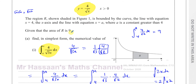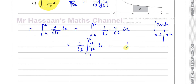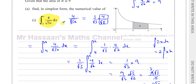I can write the constant one over root three outside the integral sign. The integral of four over root x between a and four equals nine, because they've told us the area of this region is nine. So this becomes one over root three times nine, which is nine over root three. Rationalising the denominator gives nine times root three over three, which simplifies to three root three square units. That's the answer to part one.